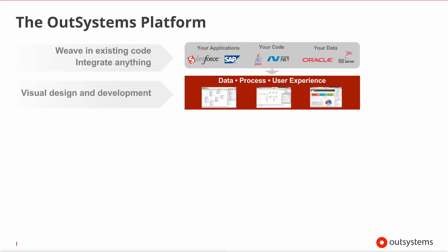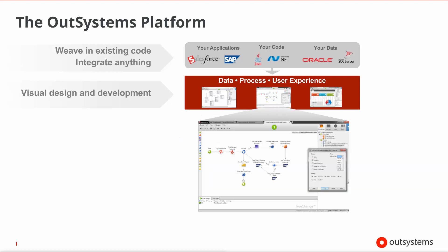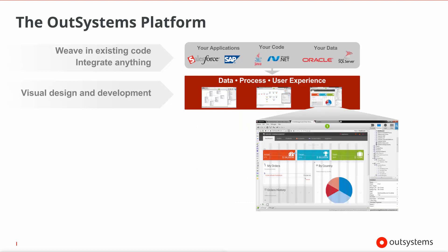And this is where OutSystems comes in. Its visual approach to application development allows new systems and applications to be built over these existing systems. For this new application you can import existing data as well as expand and design new data models for your application. You can visually design the underlying logic and the business processes that describe what the business wants to achieve.